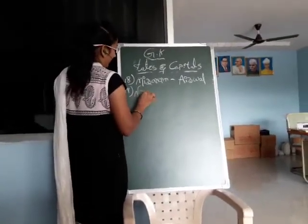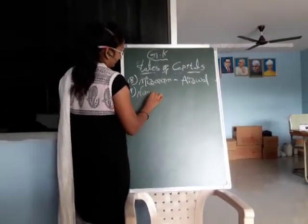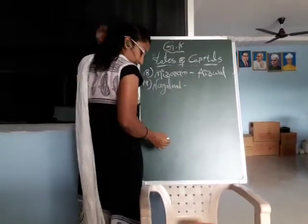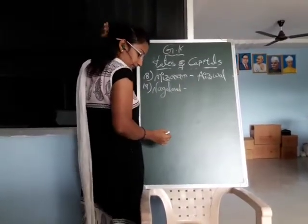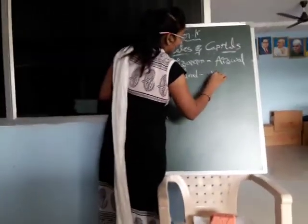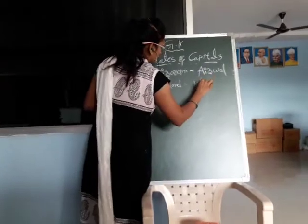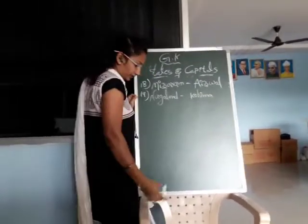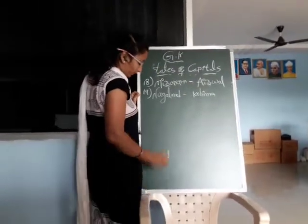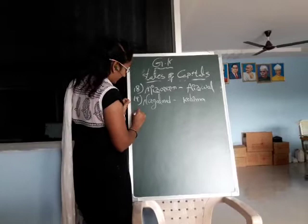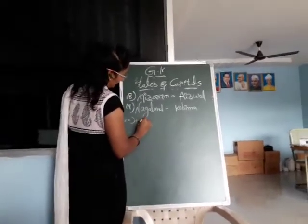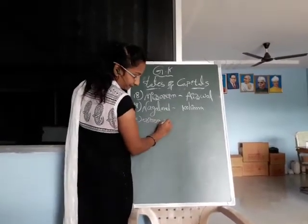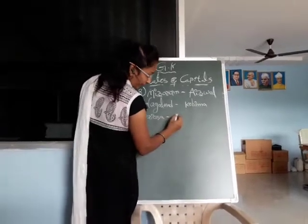Next, Nagaland. Nagaland — Kohima. Next, Odisha capital.